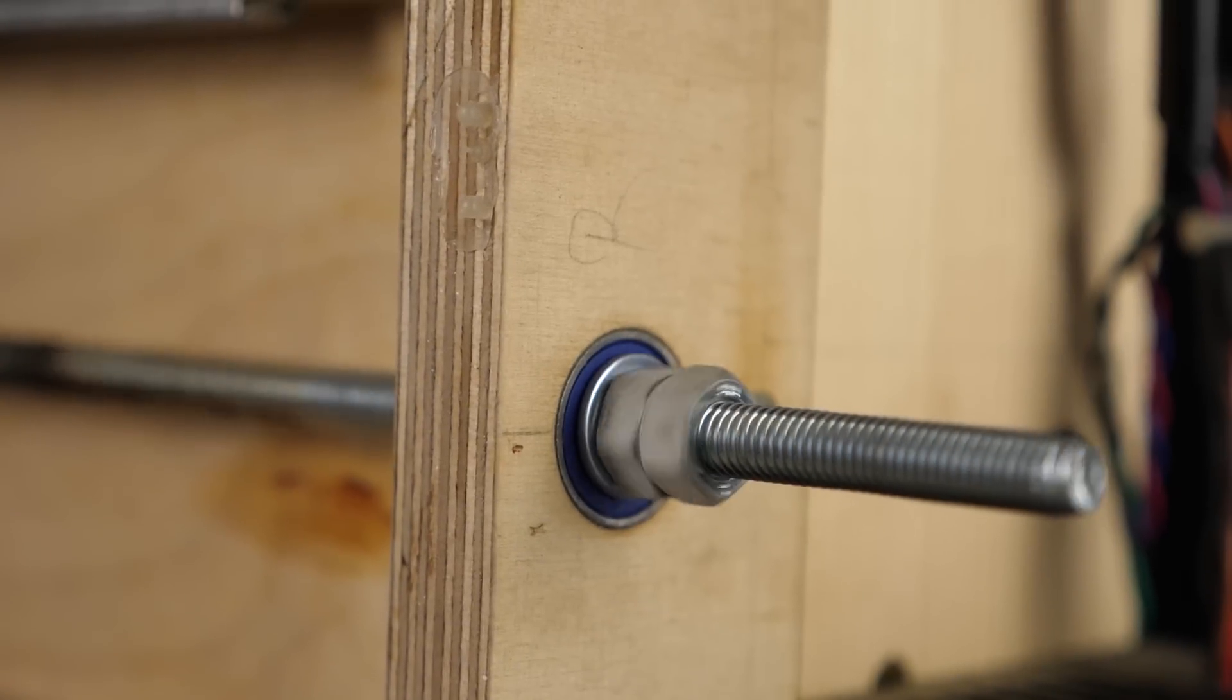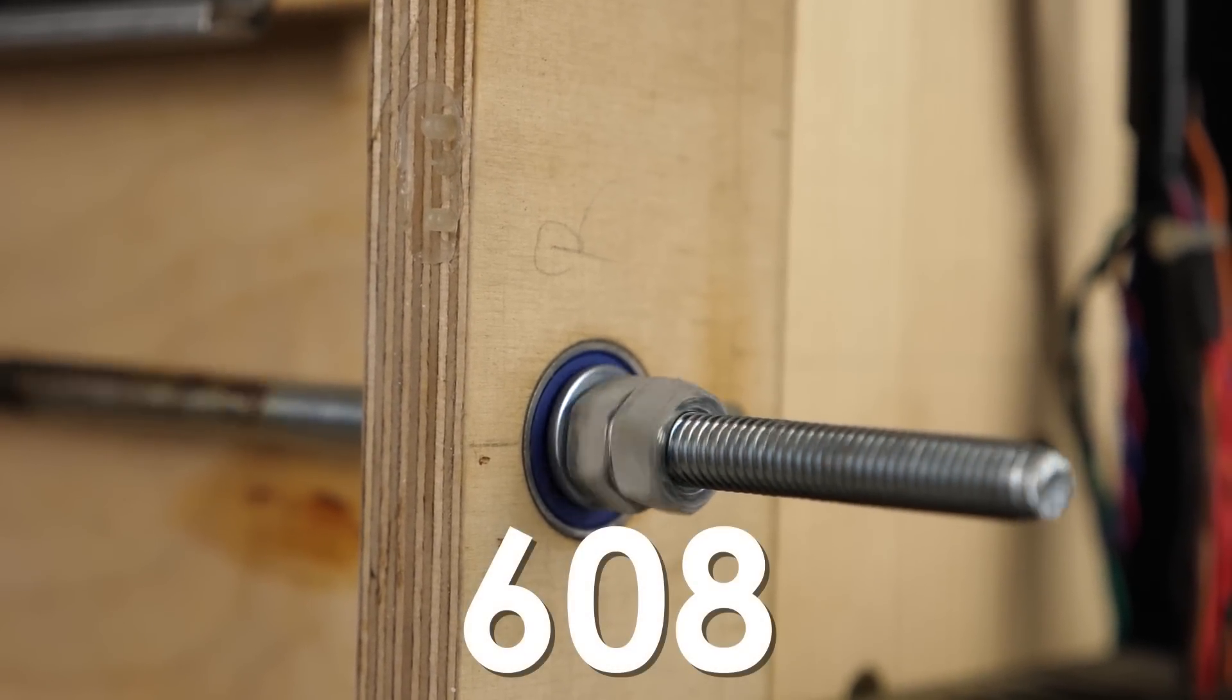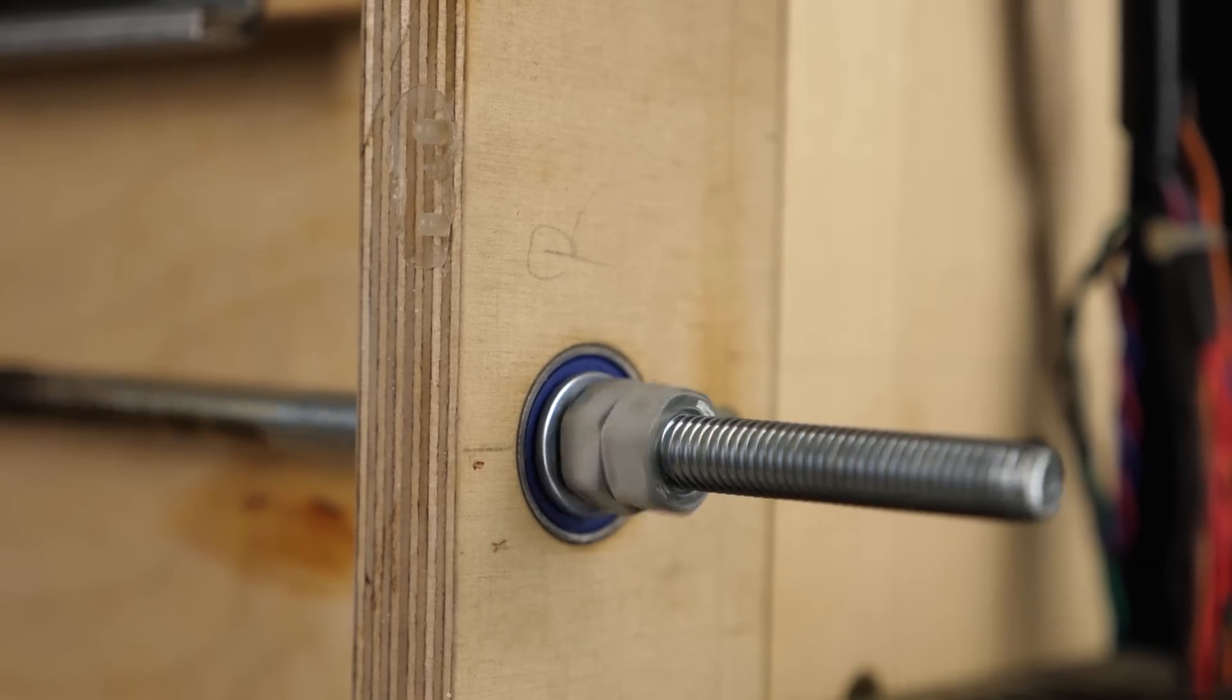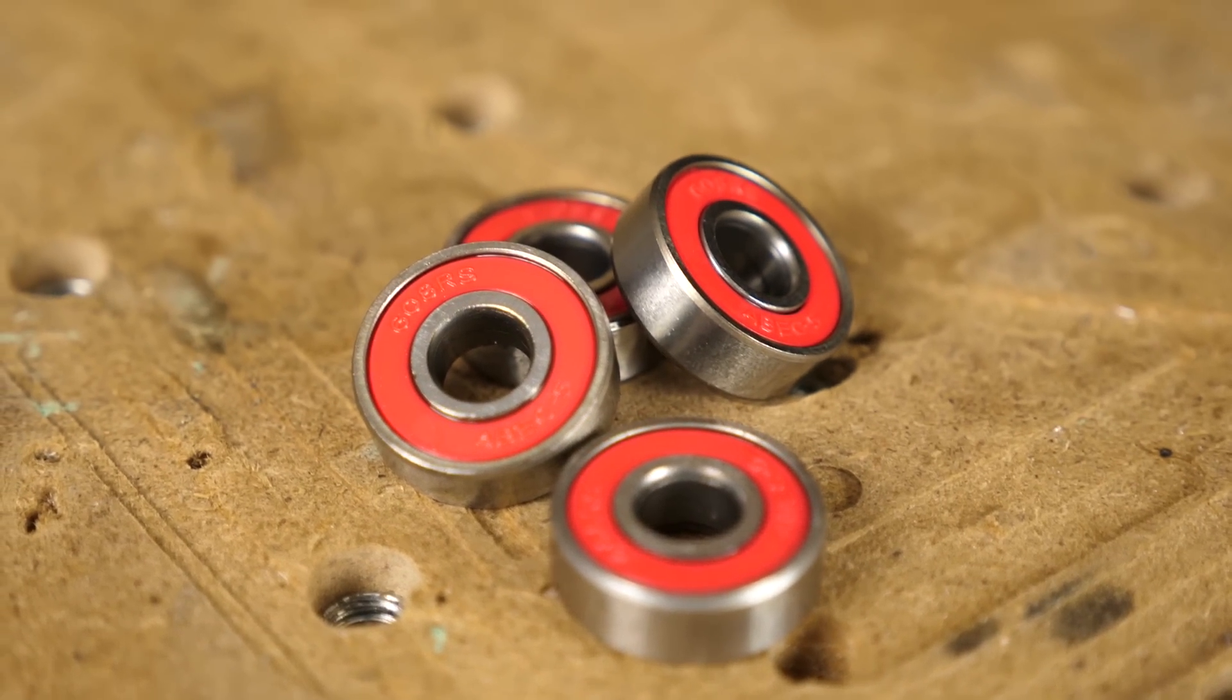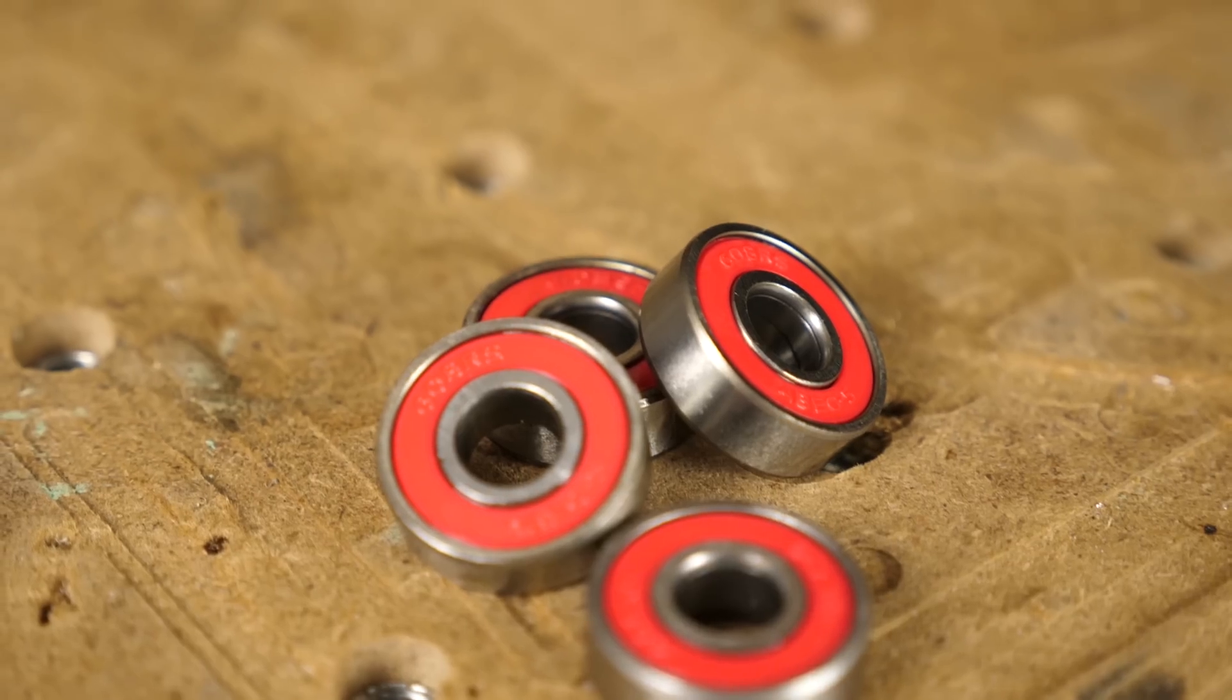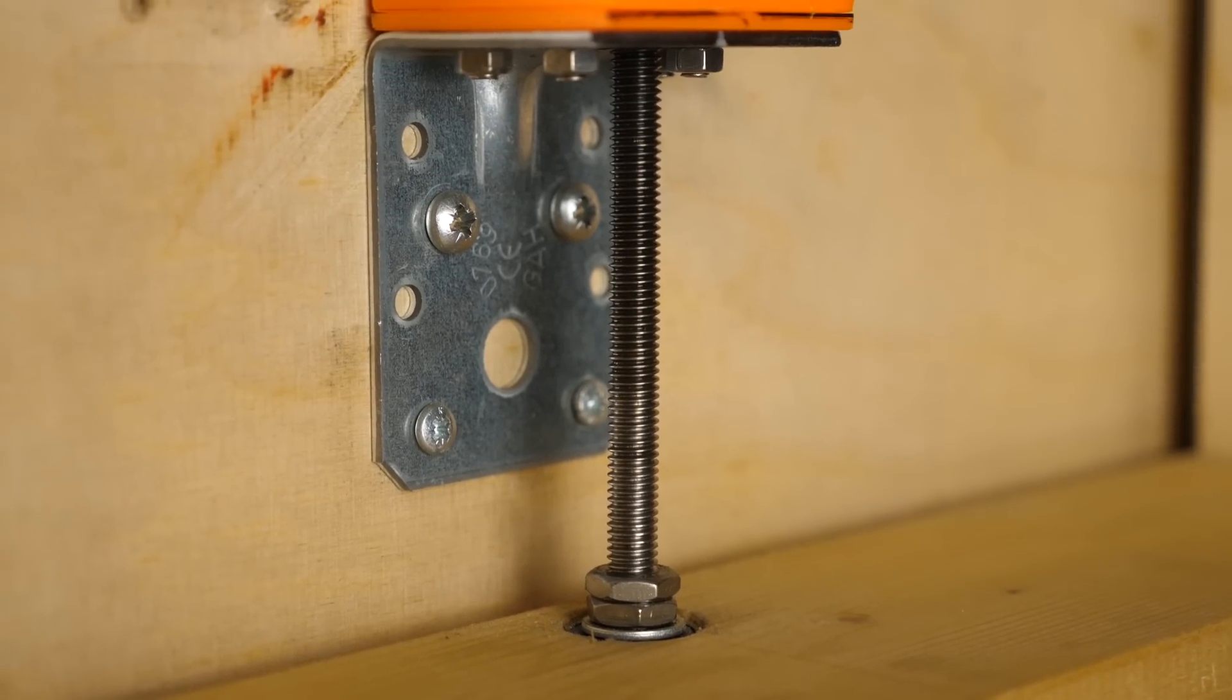The lead screws are simple M8 threaded rods that are supported by 608 roller blade bearings that I actually bought in a sports store at that time. On one side there is always a fixed bearing setup with two opposing bearings where the lead screw is mounted against with counter nuts. The other side is only a loose bearing.